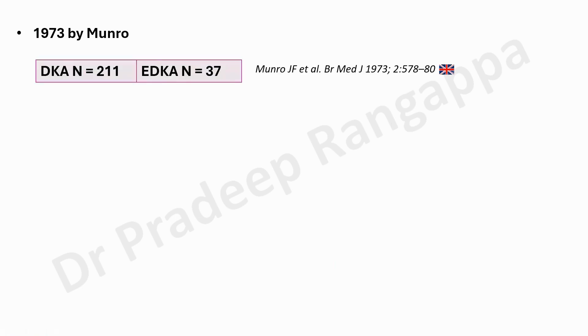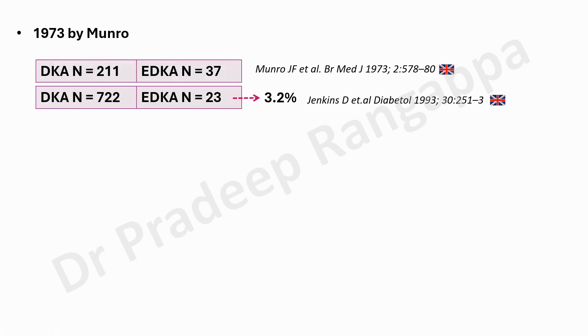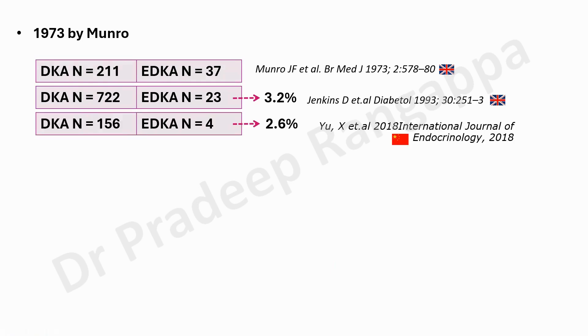Historically, this was first described in 1973 by Munro from the UK in a case series of 211 DKA patients, of which 37 had EDKA. Another prospective cohort from a UK group evaluated 722 DKA patients and found 23 had EDKA, giving a prevalence of around 3.2%. A meta-analysis from China looked at 156 DKA cases and found 4 EDKA cases — an occurrence rate of 2.6%. This is the available historical data.